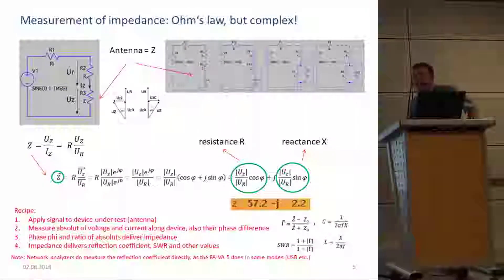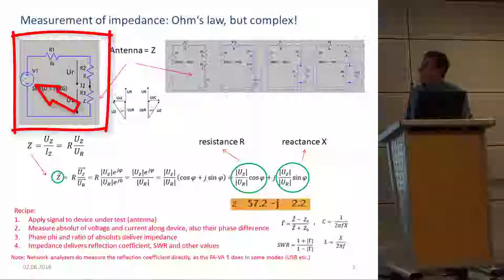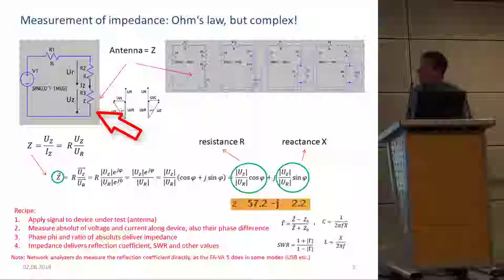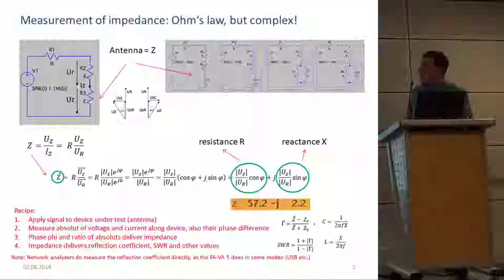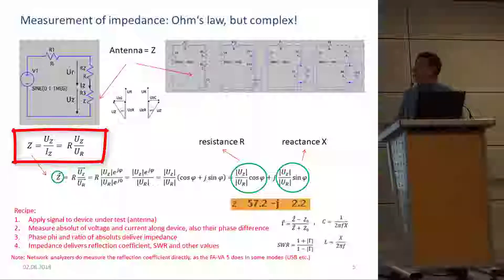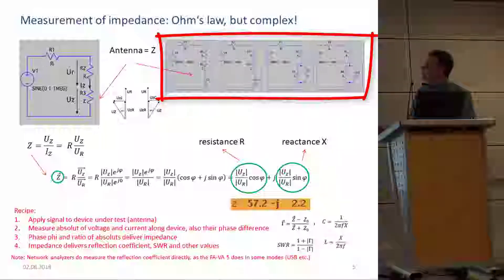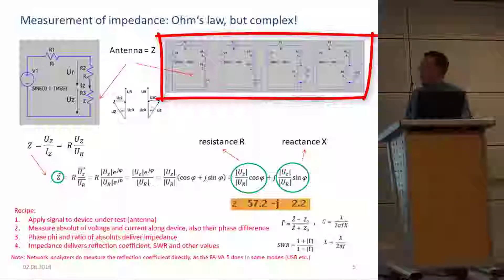How does it work? Measuring standing wave ratio and impedance is pretty much about using Ohm's law. If we have an antenna or another device under test, we apply a signal to it, measure the voltage, and measure the current through it — the relation gives us the impedance. Since we cannot easily measure current directly, we measure a second voltage across a well-known reference resistor. The world is more complex because we measure complex impedances, meaning there is a phase difference between voltage and current. The device under test can be represented by equivalent serial or parallel circuit models.